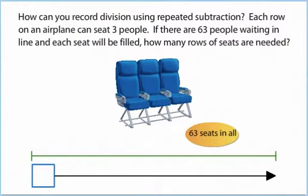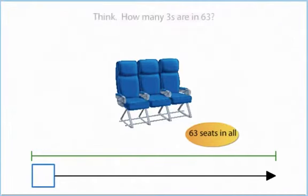How can you record division using repeated subtraction? Each row on an airplane can seat three people. If there are 63 people waiting in line and each seat will be filled, how many rows of seats are needed?